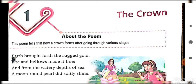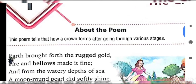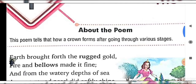We have written a line in the starting point. We will make clear what the poet has written in this poem and what he wants to tell us. This poem tells how a crown forms after going through various stages, and what kind of king is ready for it.